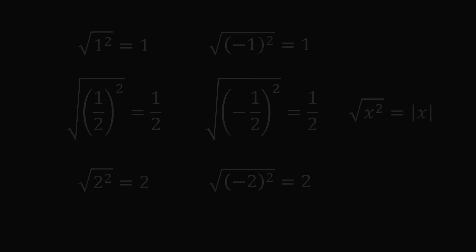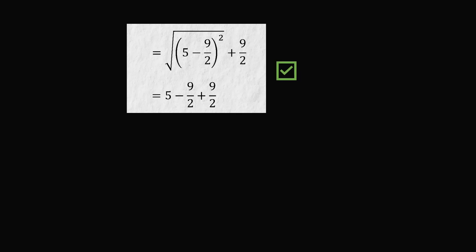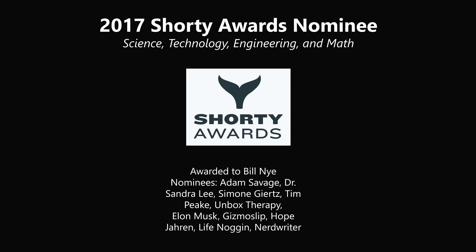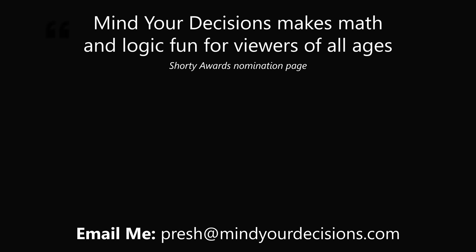Bringing this back to the false proof: when we have the square root of the square of (5 minus 9 over 2), since 5 minus 9 over 2 equals 1 half, which is greater than 0, the square root and square cancel out. But for 4 minus 9 over 2, which is less than 0, they do not cancel — and that's where the mistake is in the proof that 2 plus 2 equals 5. Thanks for making us one of the best communities on YouTube. See you next episode of Mind Your Decisions, where we solve the world's problems one video at a time.